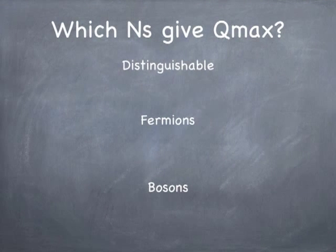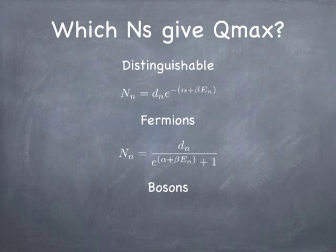I'm going to work through the Einstein model of solids in detail. The occupation number — the expected number of particles in the nth state — depends on the energy and degeneracy of the state, and on something called beta, which is related to temperature, and a normalization constant needed to get the total number of particles right. If the particles are distinguishable the formula looks one way; if they're fermions or bosons, it's a little different. Griffiths does a lovely job describing where these formulas come from.